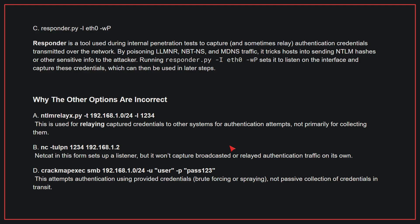Why the other options are incorrect: A — this is used for relaying captured credentials to other systems for authentication attempts, not primarily for collecting them. B — Netcat in this form sets up a listener, but it won't capture broadcasted or relayed authentication traffic on its own. D — this attempts authentication using provided credentials, not passive collection of credentials in transit. Therefore, the correct answer is C.